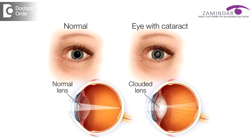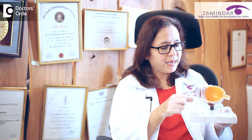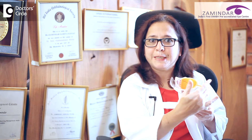Cataract is the clouding of the natural crystalline lens. When this lens, which is supposed to be clear, becomes clouded — as you can see in this model of an eye, this is a clear lens that becomes clouded — the rays of light entering the eye are disturbed by the clouding of the lens and do not all reach the retina.